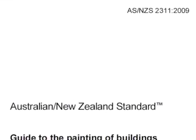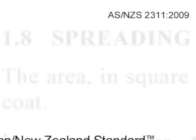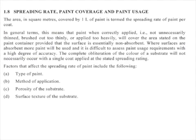The Australian Standards 2311, in section 1.8, covers spreading rate, paint coverage, and paint usage. Firstly, an area is measured in square meters. Coverage is based on how many liters of paint is required for that square meter area.